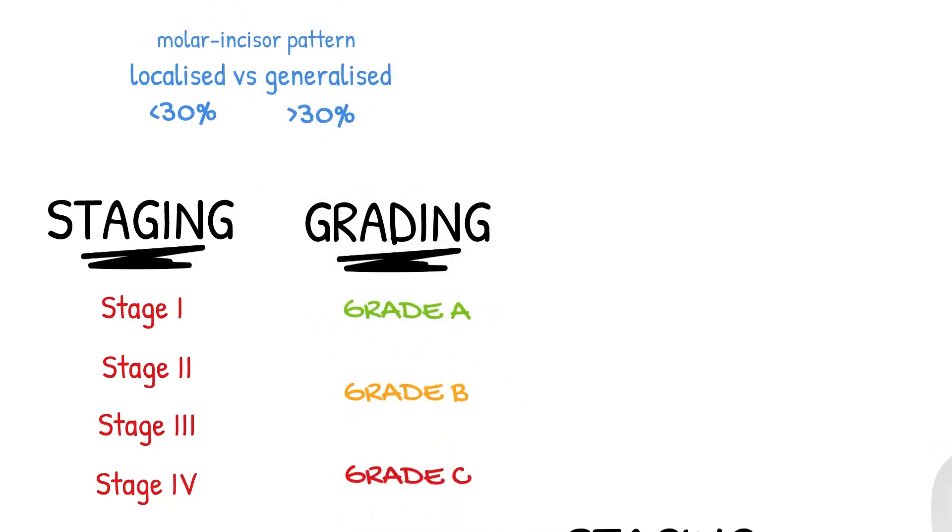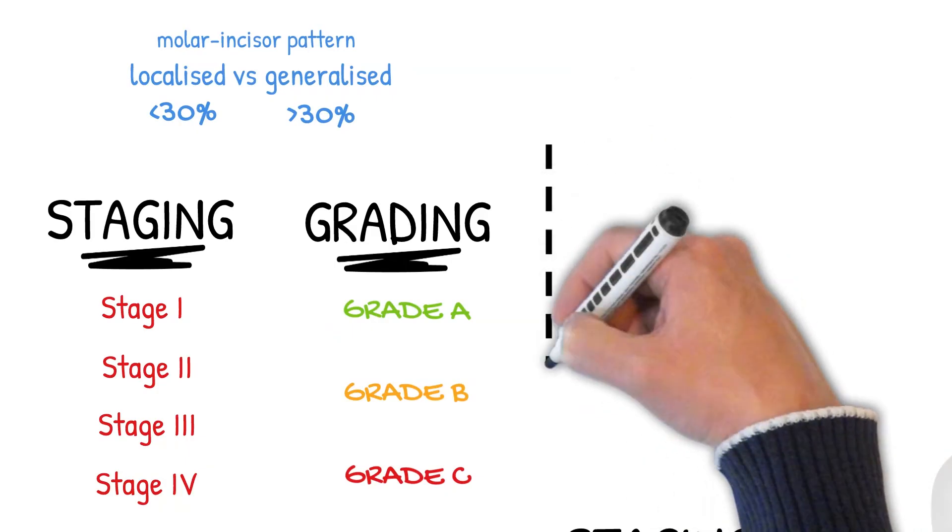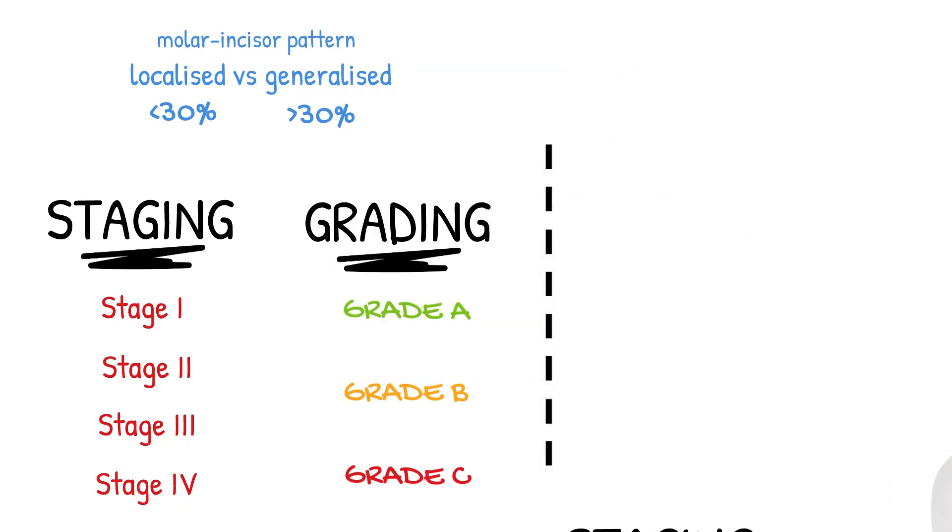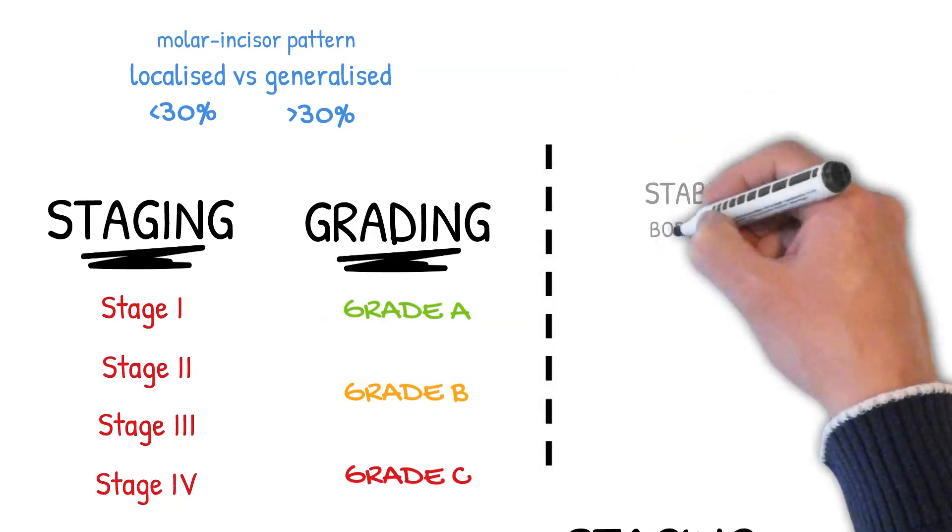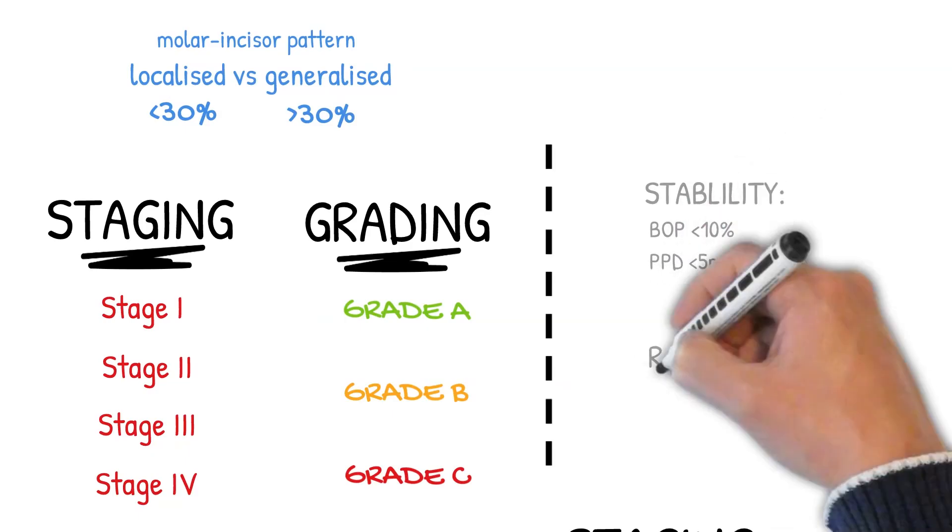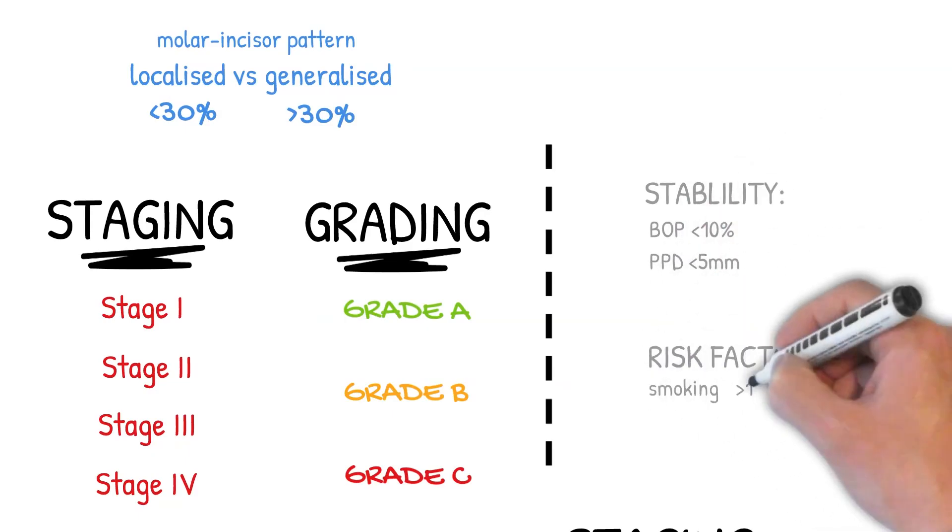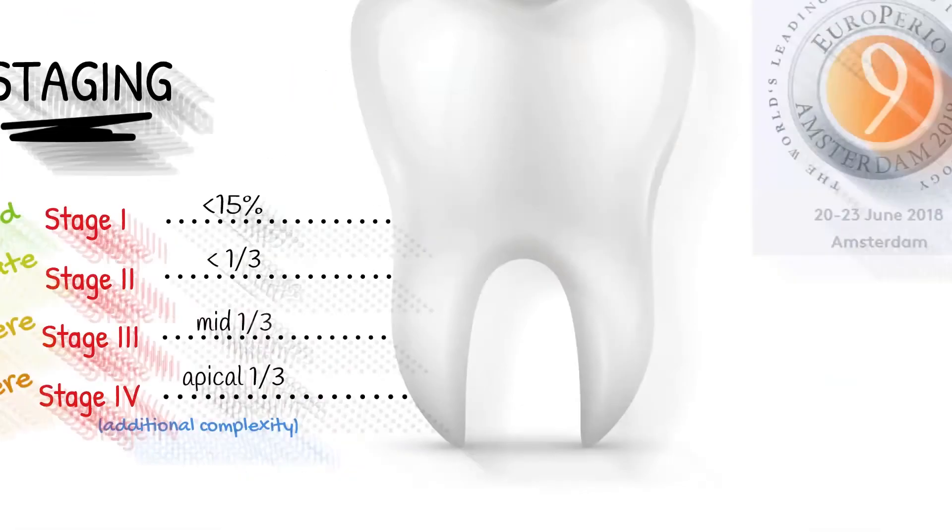The BSP recommends including additional secondary criteria as part of the diagnosis, such as the stability of the disease and the presence of other risk factors such as smoking or uncontrolled diabetes.